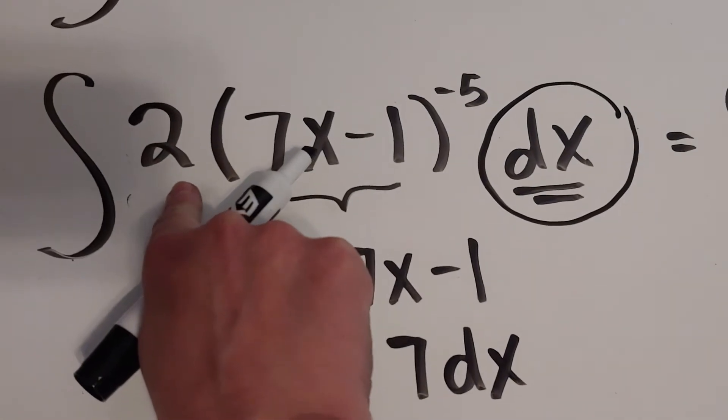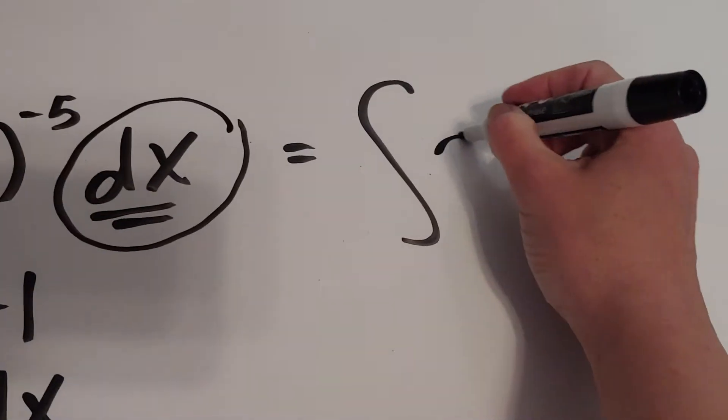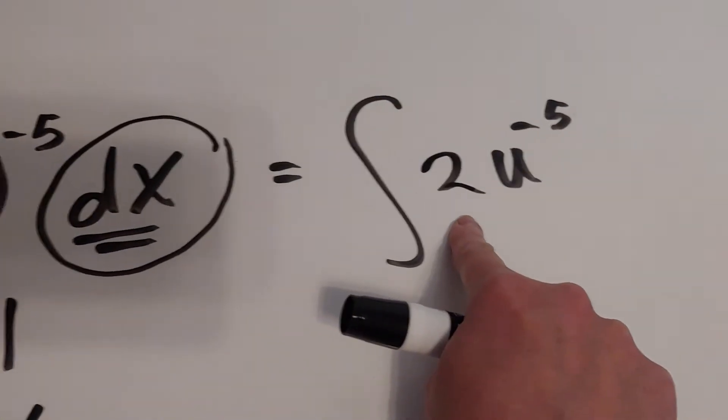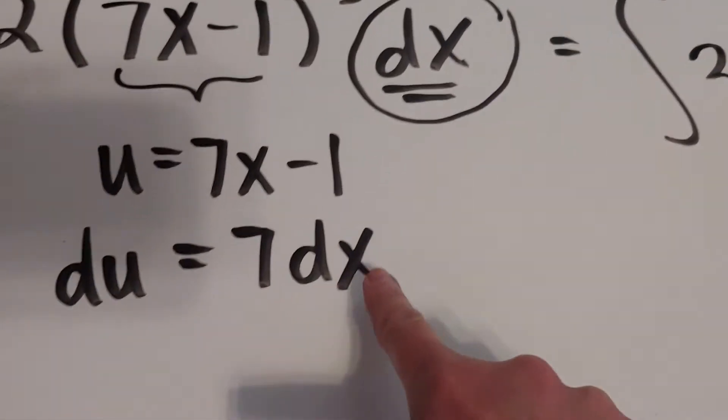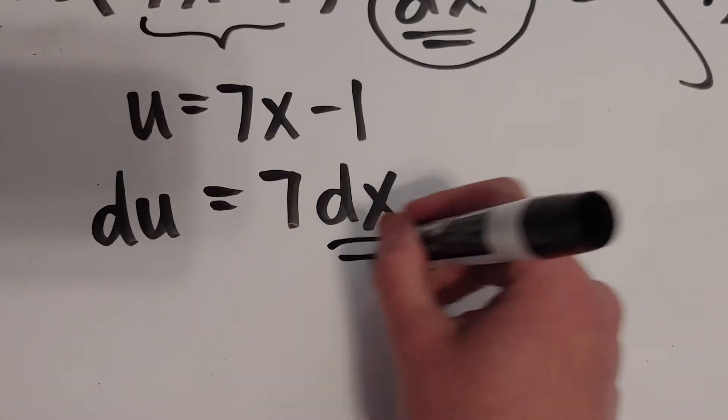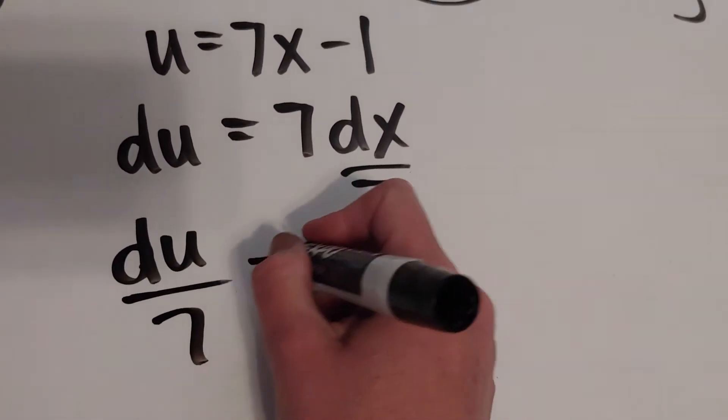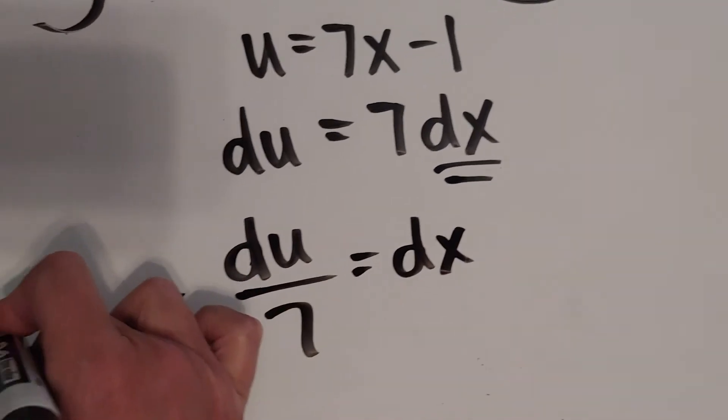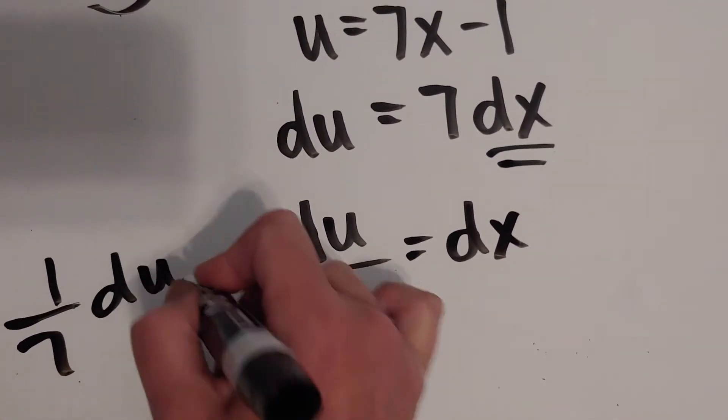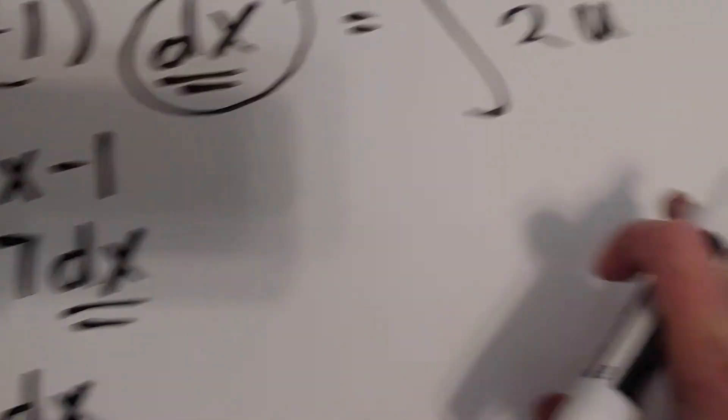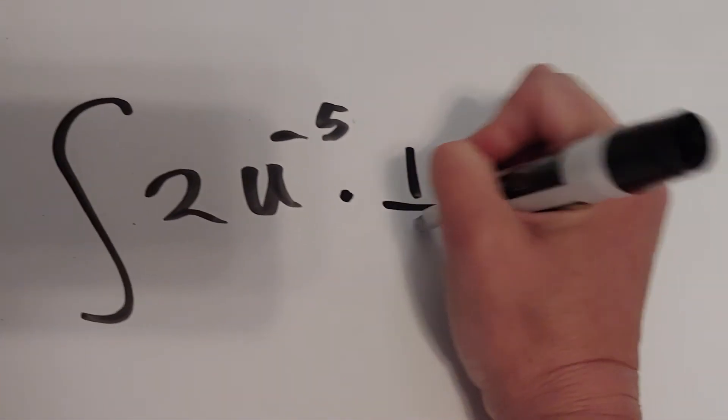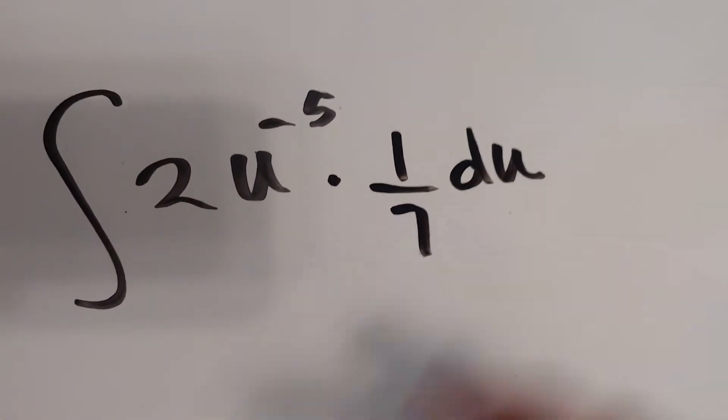That 2 is going to still be over here. So the 2 is still going to be over here, but I'm now just going to trade out the dx. So to make this deal for just the dx, I would get that du over 7 equals dx, or 1 7th du will trade for dx. So that 2, I couldn't really figure out what to do with, but I'm going to have a 1 7th du now that I just traded for.